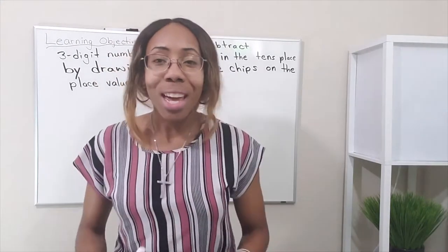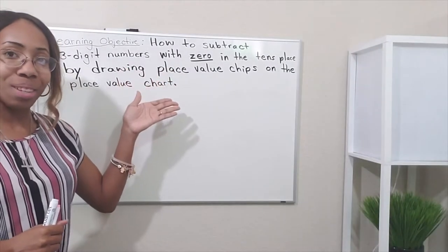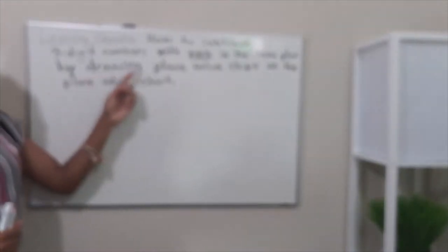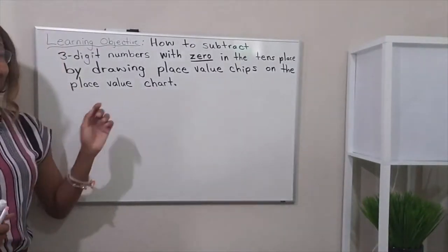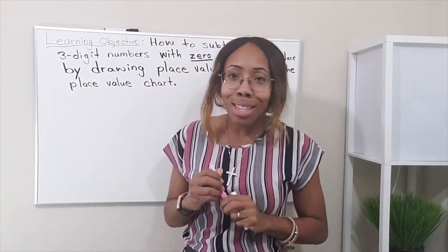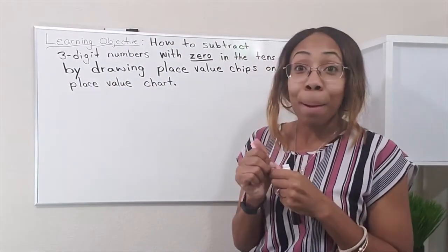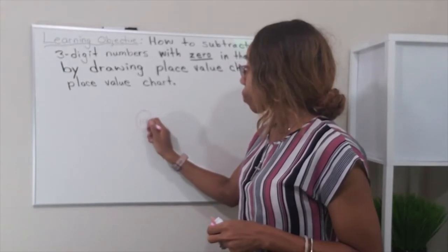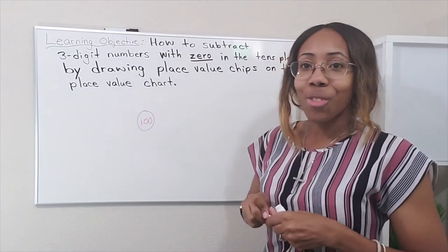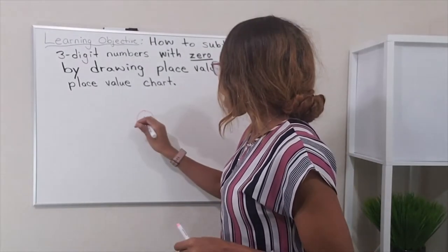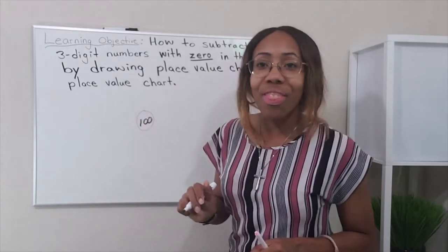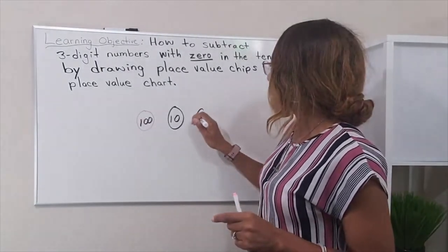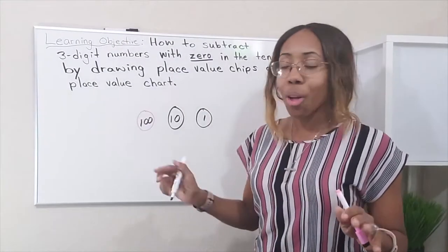So today, in today's lesson, we are going to work on how to subtract three-digit numbers with zero in the tens place by drawing place value chips on the place value chart. A place value chip is just a little tiny circle. Think of it like a cookie — a yummy cookie — but the cookie has a 100 in the middle, or a 10, or a 1.